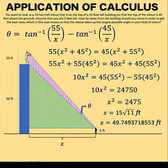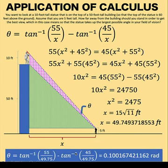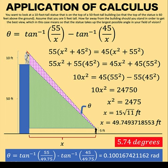And so substituting now this value to this equation in order to find the angle, we have theta equals 0.100167421162 radians, or 5.75 degrees. So this means that the largest possible angle in the field of vision of this man is about 5.74 degrees. And that happens when he is about 49.75 feet away from the building. And this problem is now solved.